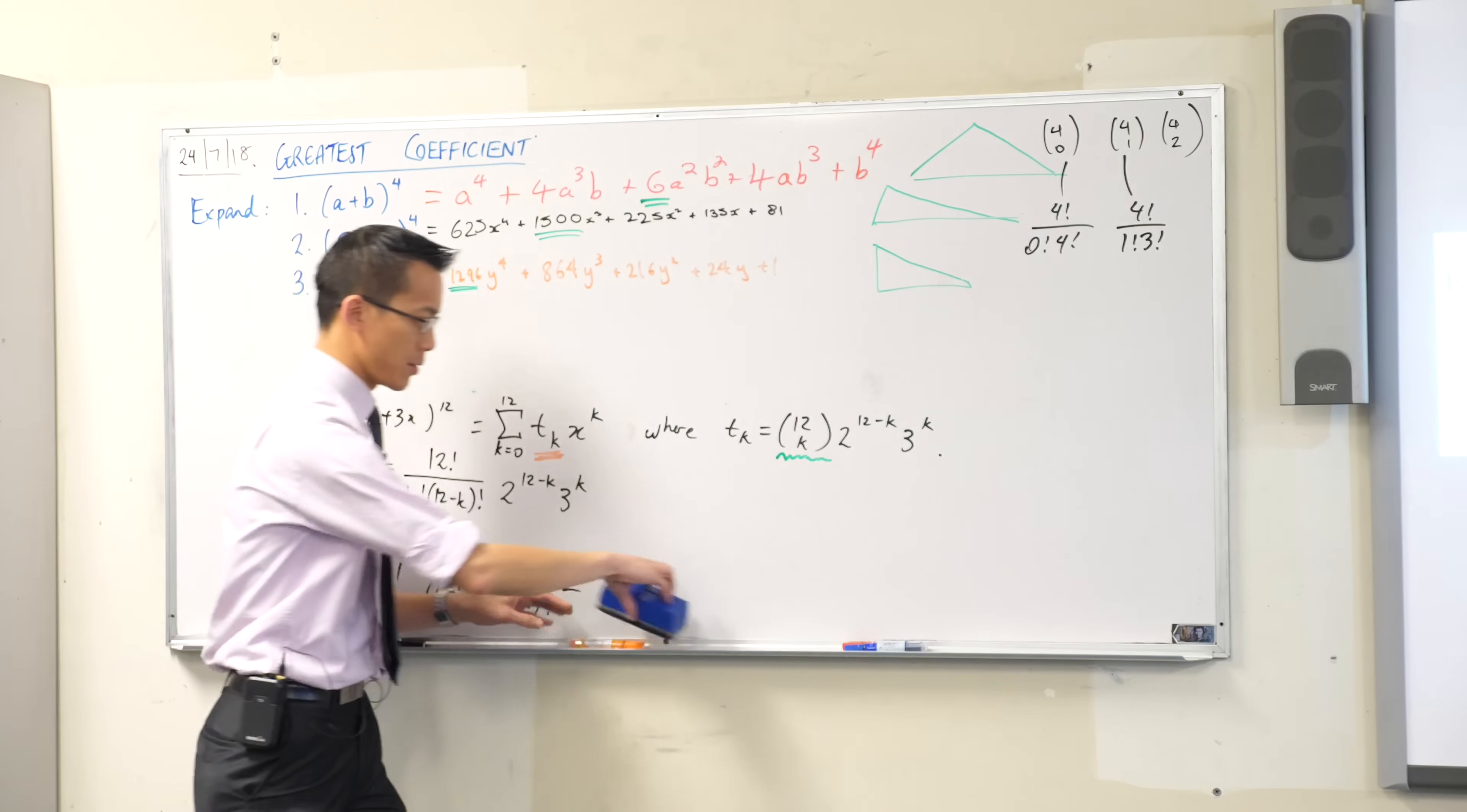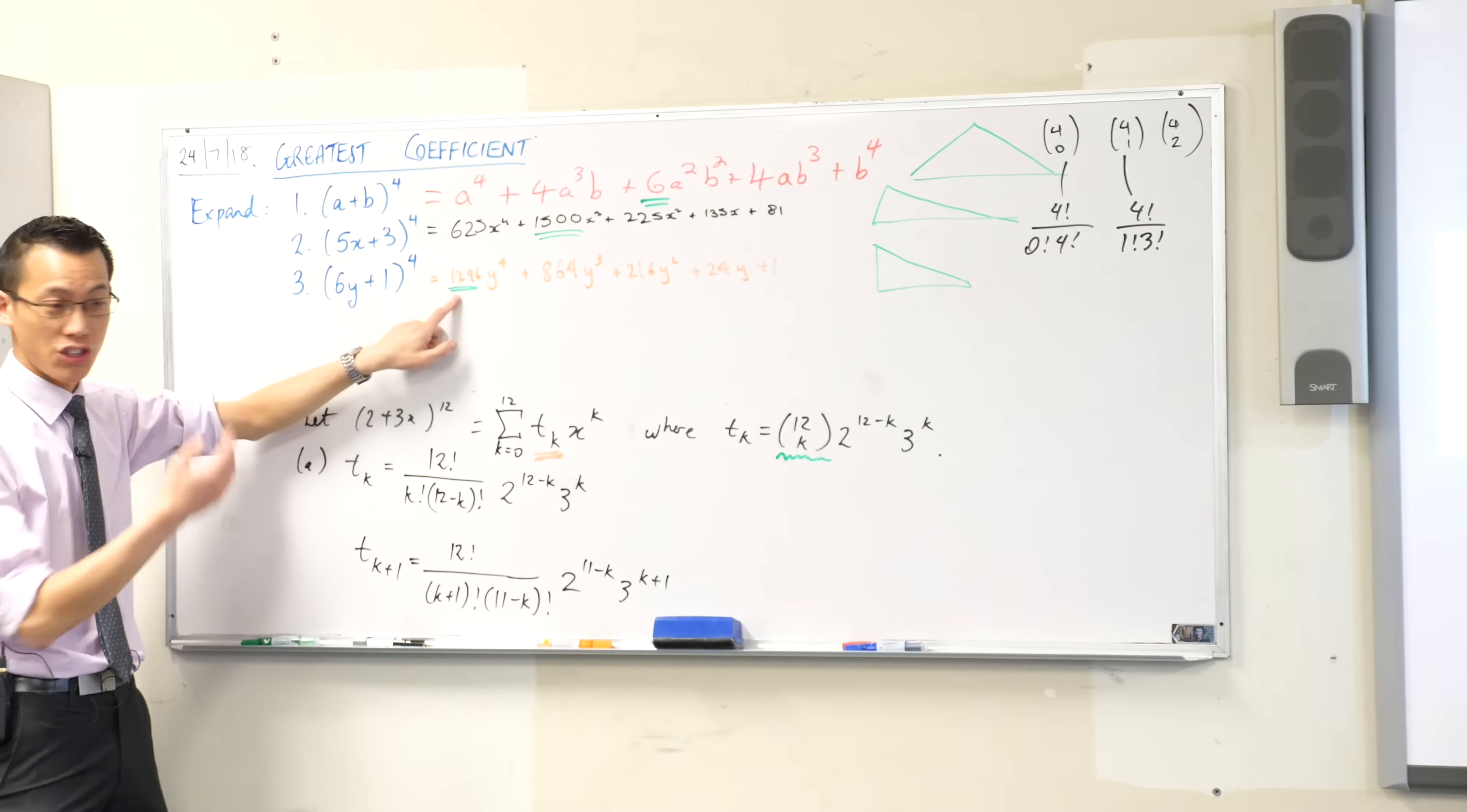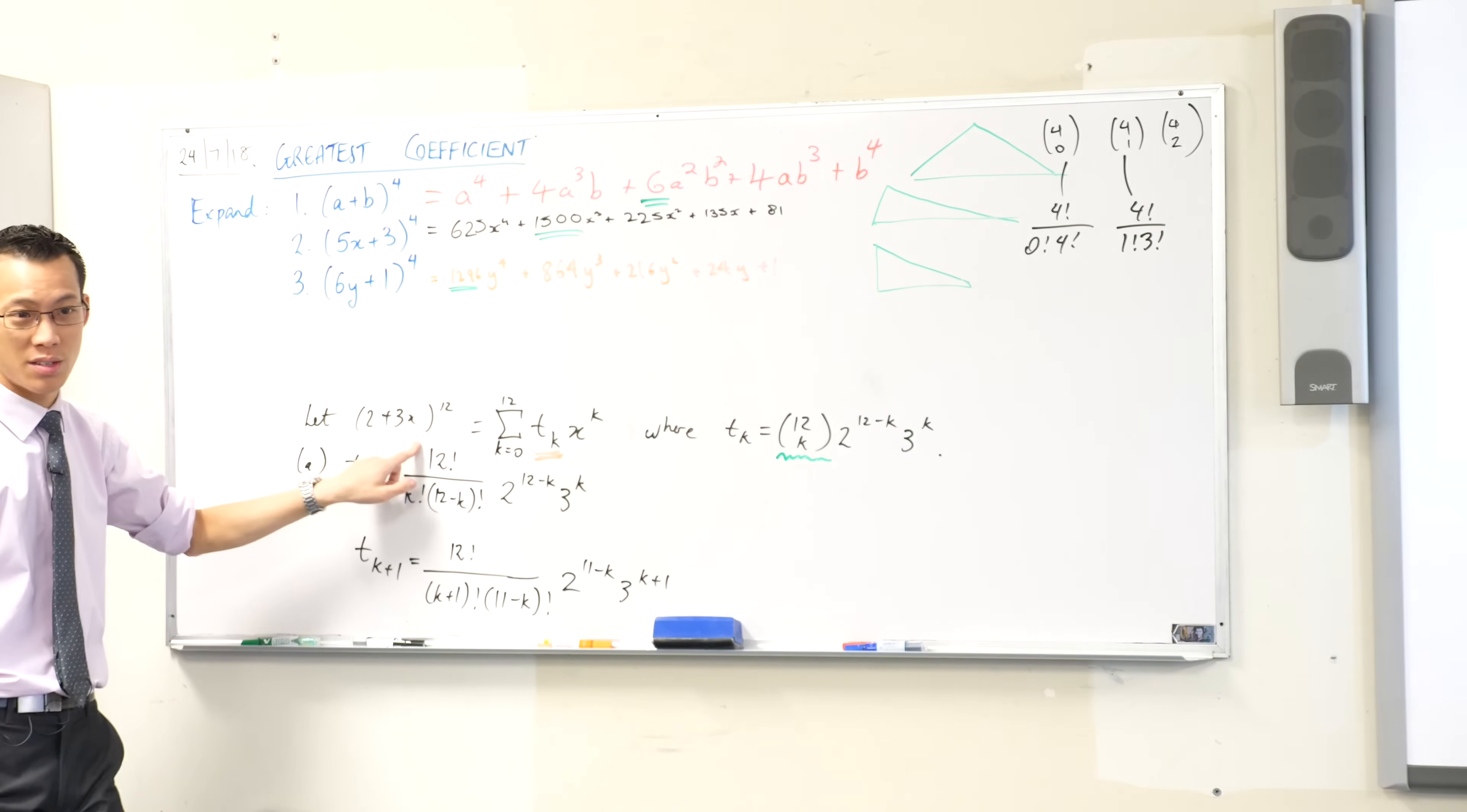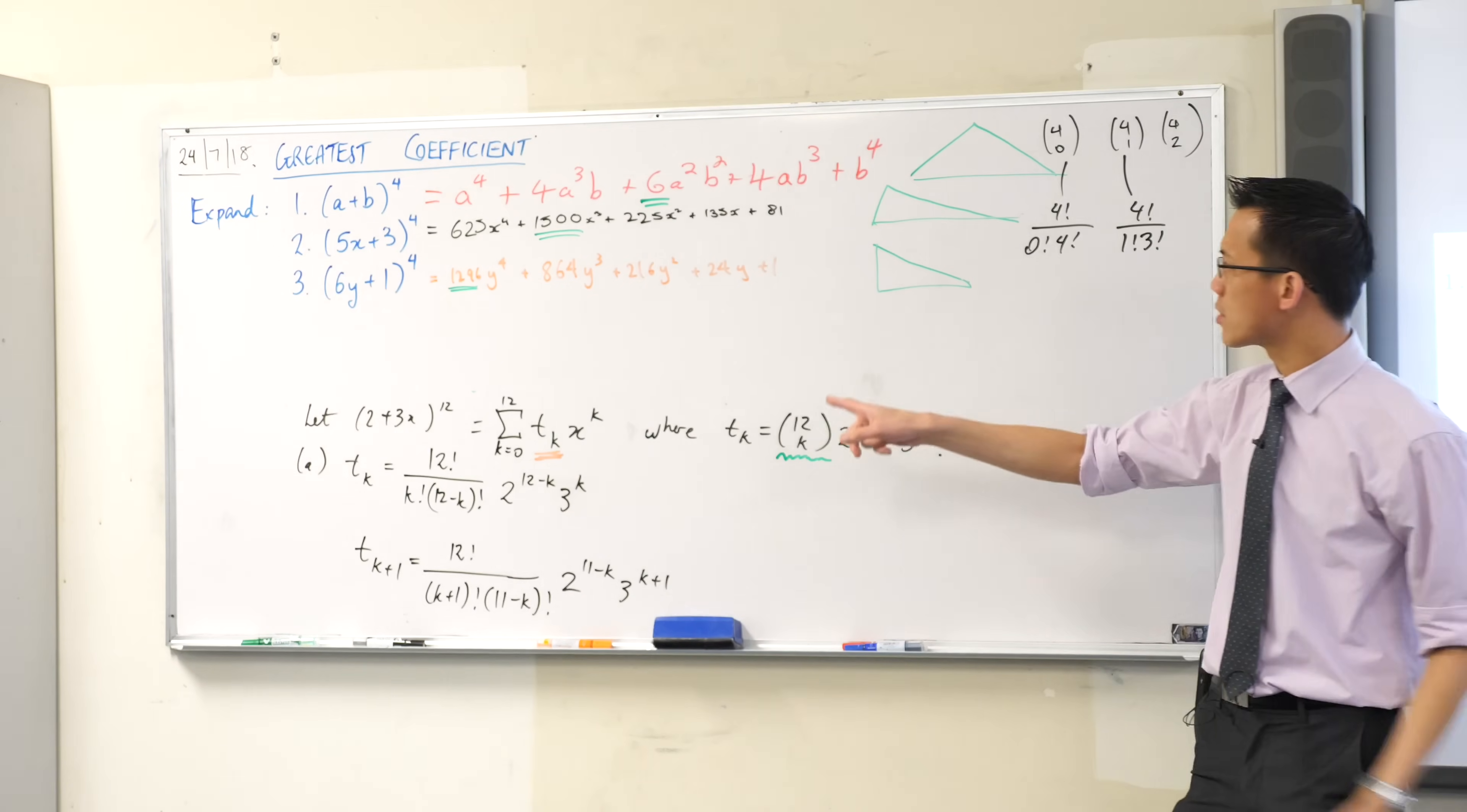I want you to have a look at the coefficients, the t sub k's for all of these. Pay close attention because the piece of logic that you need is very simple, but if you don't get it, then the next is just going to be algebra soup for no reason. So what I want you to observe is, one way of working out the greatest coefficient is just to work out all the coefficients.